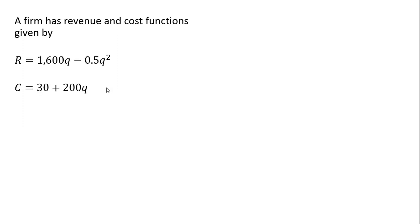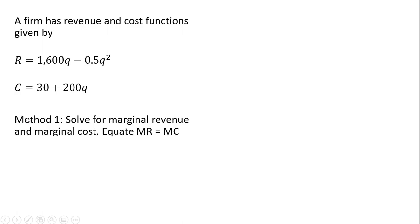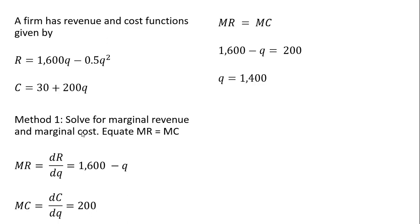Let's do one more example. Different revenue and cost functions this time. So we're going to just do method 1 here. I'll get marginal revenue, and we'll get back 1,600 minus q. So 2 times 0.5 is just going to be 1 here, so we get minus q. And marginal cost is just simply 200. Setting those equations equal and solving for q, q equals 1,400.